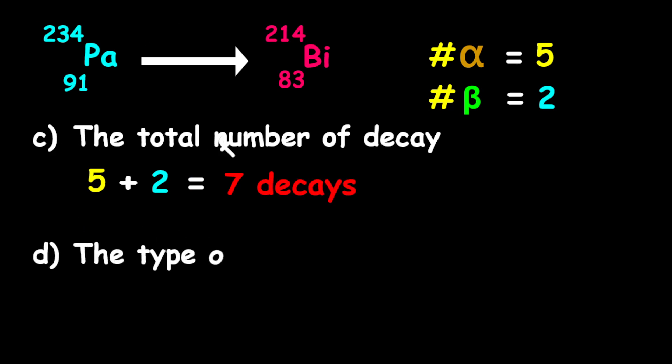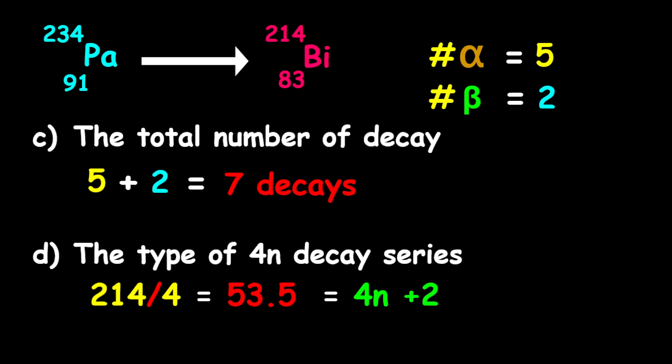Now, for the next part of the question, which is part D, we need to determine the type of 4N decay series. This should be relatively easy based on our previous lesson. What we're going to do here is take any of the masses. Let's take the 214 divided by four. What we're going to get here is 53.5. A 0.5 means we have a remainder of two. So therefore, it is a 4N plus two series.